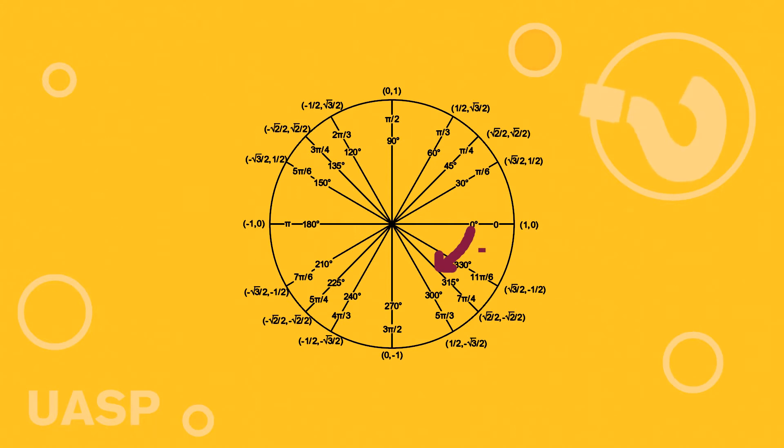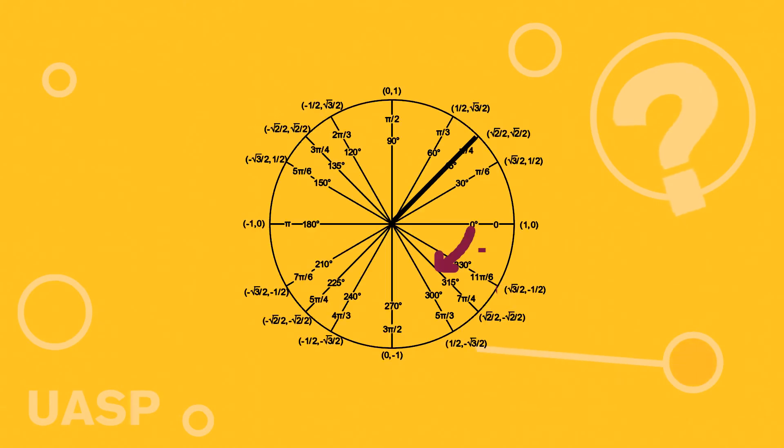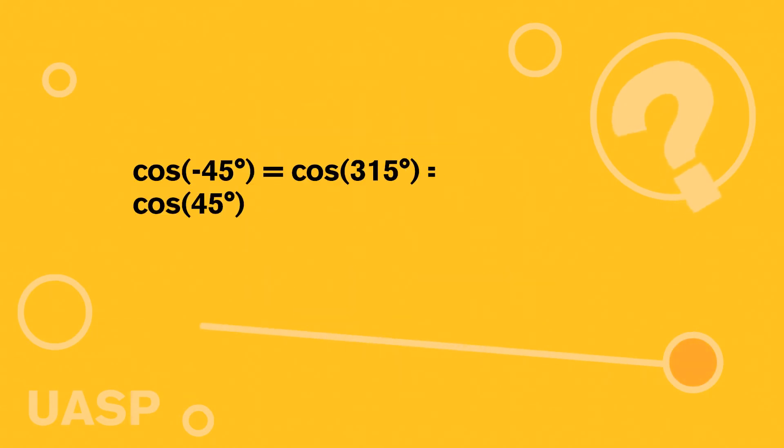So we see the negative 45 degrees here. So instead of going counterclockwise what we'll do is go clockwise to 45 degrees, which is this guy right here, the 315. So really when we say cosine of negative 45 degrees, what we're really saying is the cosine of 315 degrees, which then if we look at it and we see the x value here square root 2 over 2 and it's positive.